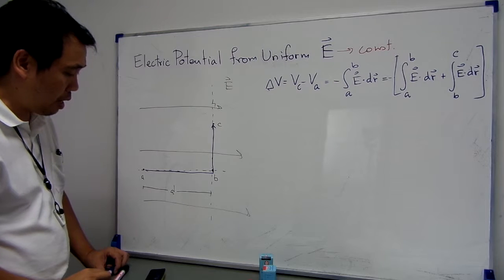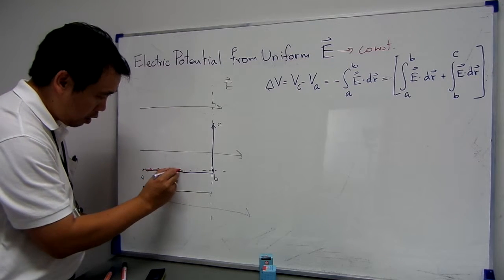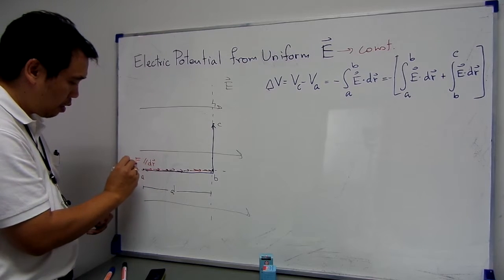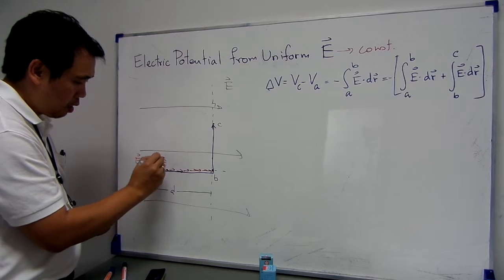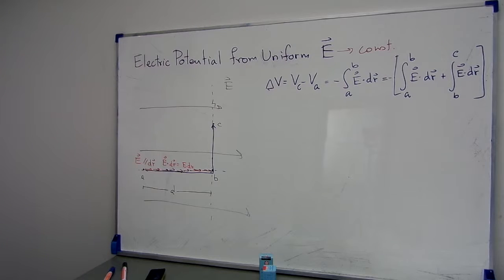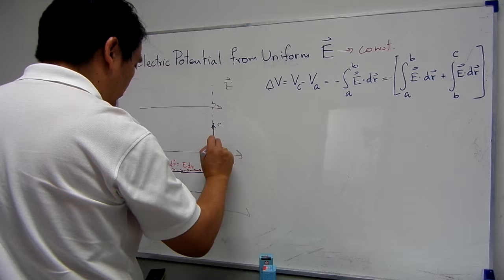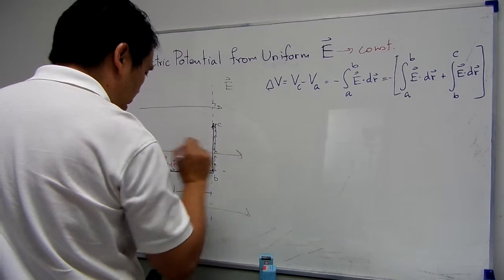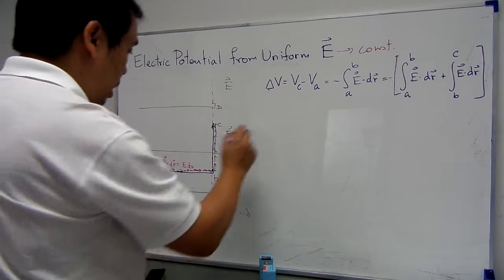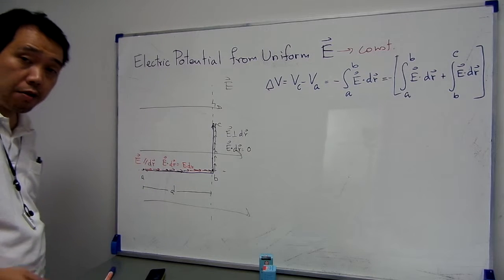Now, you may wonder why I chose this path that looks quite complicated — why not go in a straight line. We can do that also, but I will explain why we use this path. You can see that if I choose this path, we can divide the integration into two parts. On the first part, the vector dr is parallel to E. So it means that E dot dr equals E dr. But on the second part, the vector dr points in this direction and is perpendicular to E.